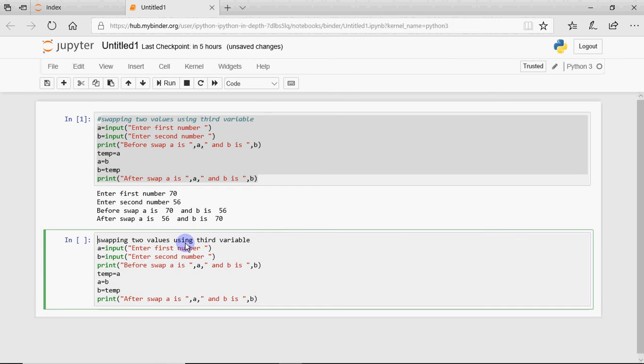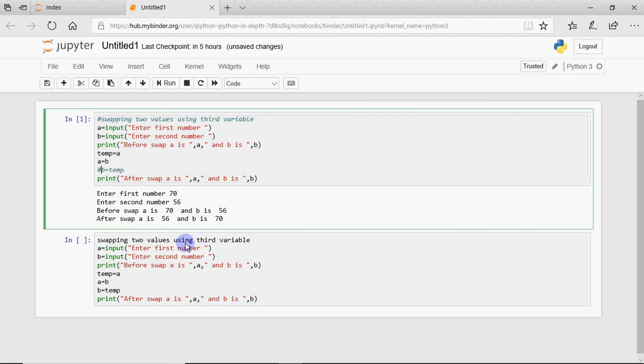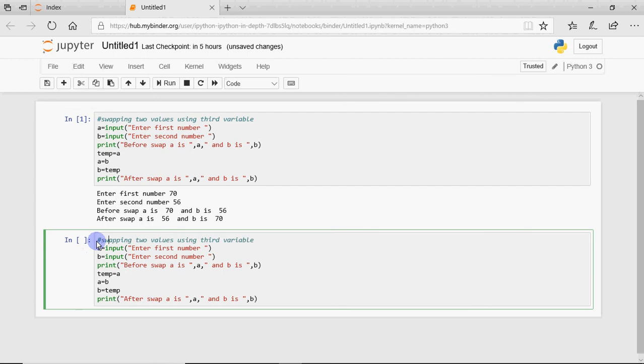Now I want to do the same thing, but without using the third variable. So for that, I've just copied and pasted the code. Here I won't say values, I'll say numbers, because we need to perform arithmetic operations. But this code could swap any two values, of any data type, because we haven't converted this input into integer. So it could be any value. Swapping two numbers without using third variable.